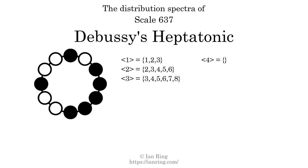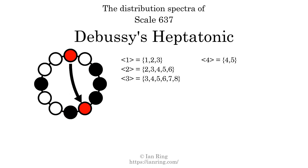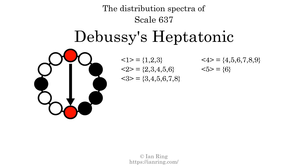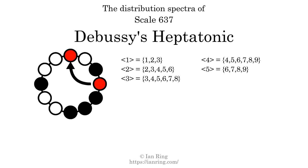The generic interval of four and five scale steps each come in 5 different specific interval sizes. The spectrum width of the four-step generic interval is 5. For five scale steps: 6, 7, 8, 9, and 10 semitones. The spectrum width of this generic interval is 4.